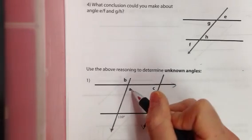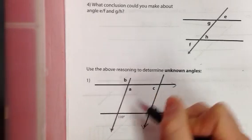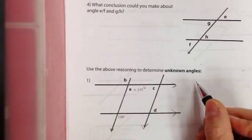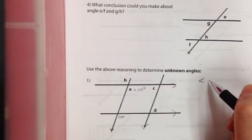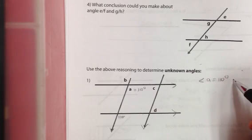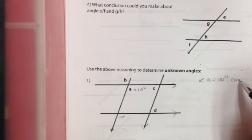Okay, that means that A and 110 are identical because they're corresponding. So, on this side here, you should be writing that angle A equals 110 degrees, and the reason is corresponding angles are equal.